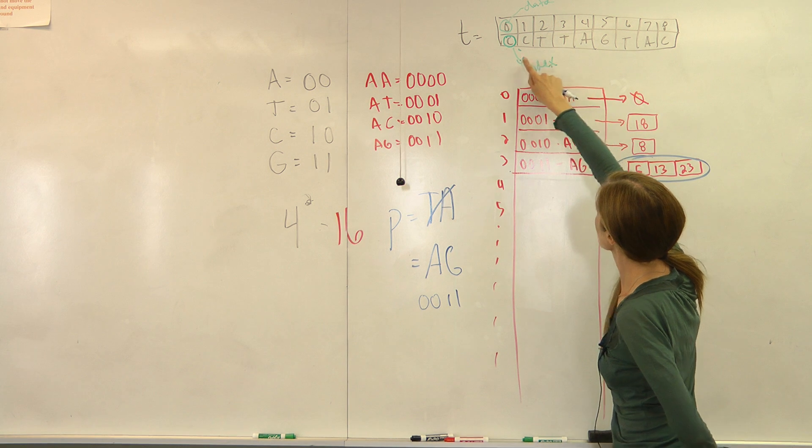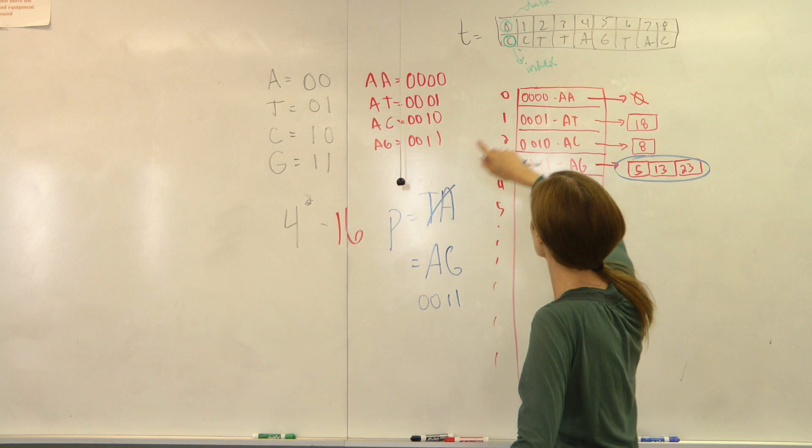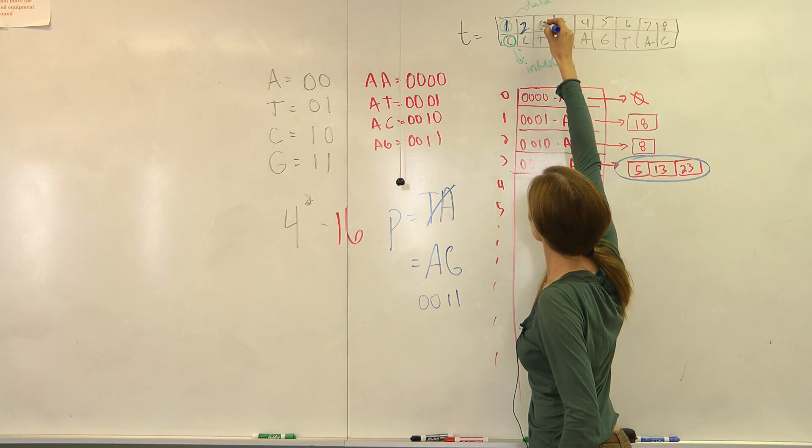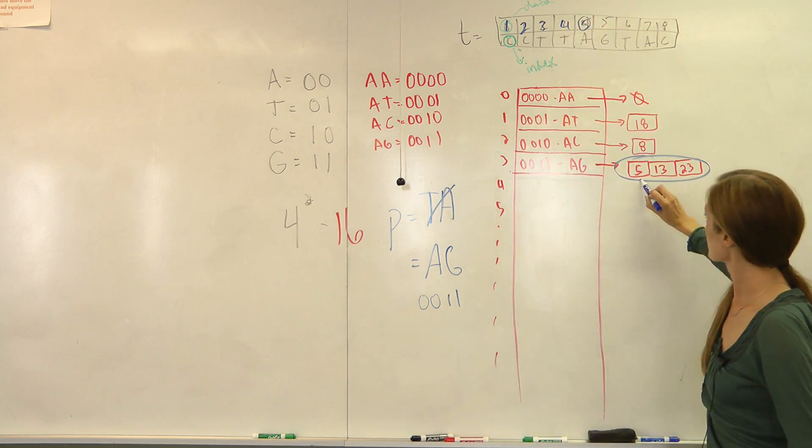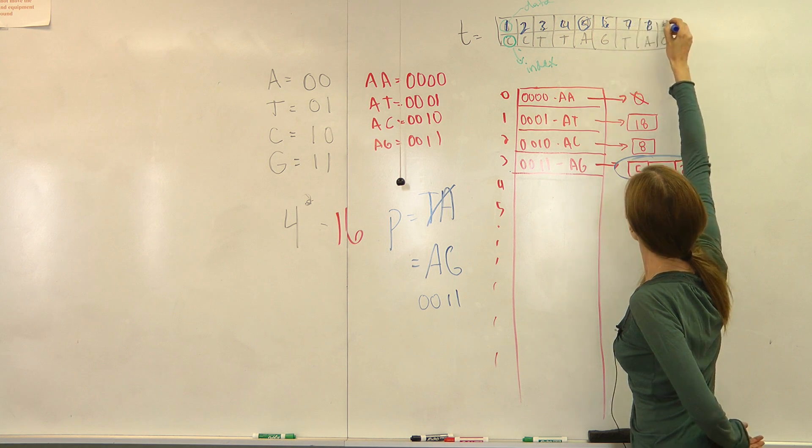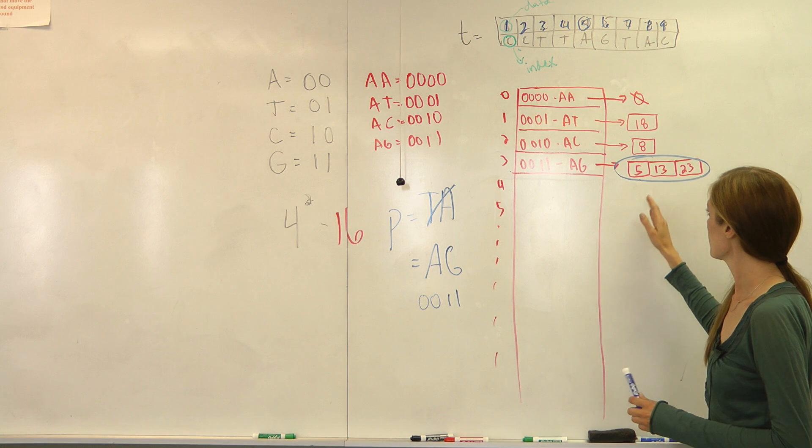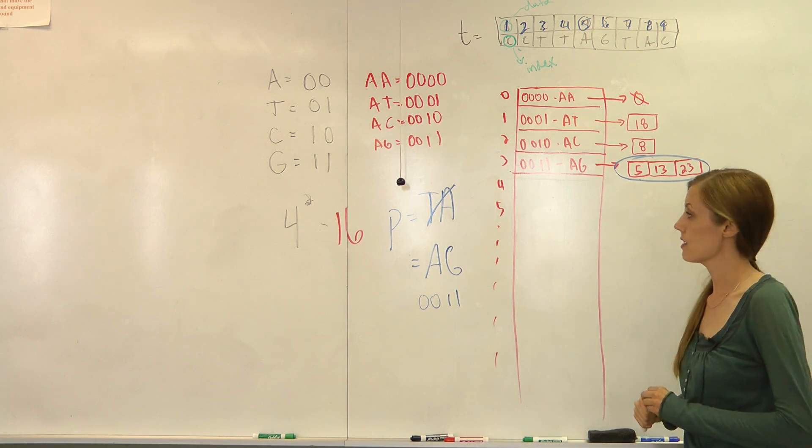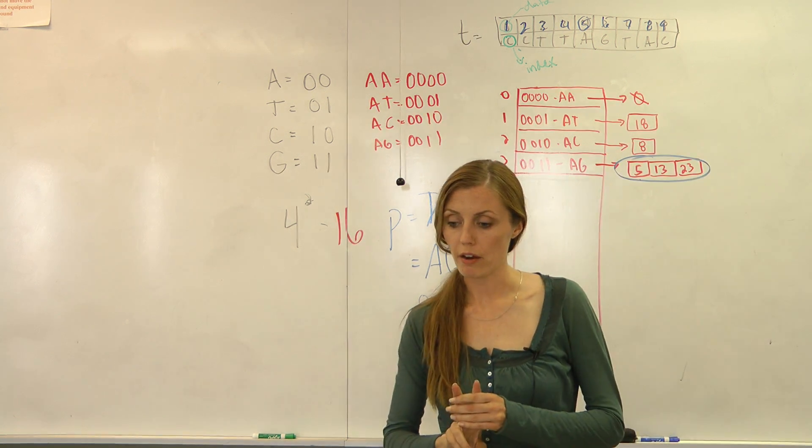And this is just, I just missed a letter in here. Oh, I know. I started the index at 1 for this text. That was inconsistent of me. But that's why this is 5 and this starts at 5. And so this would be an example of an answer if your pattern was AG, an explanation of how to make your hash table with two-mer patterns.